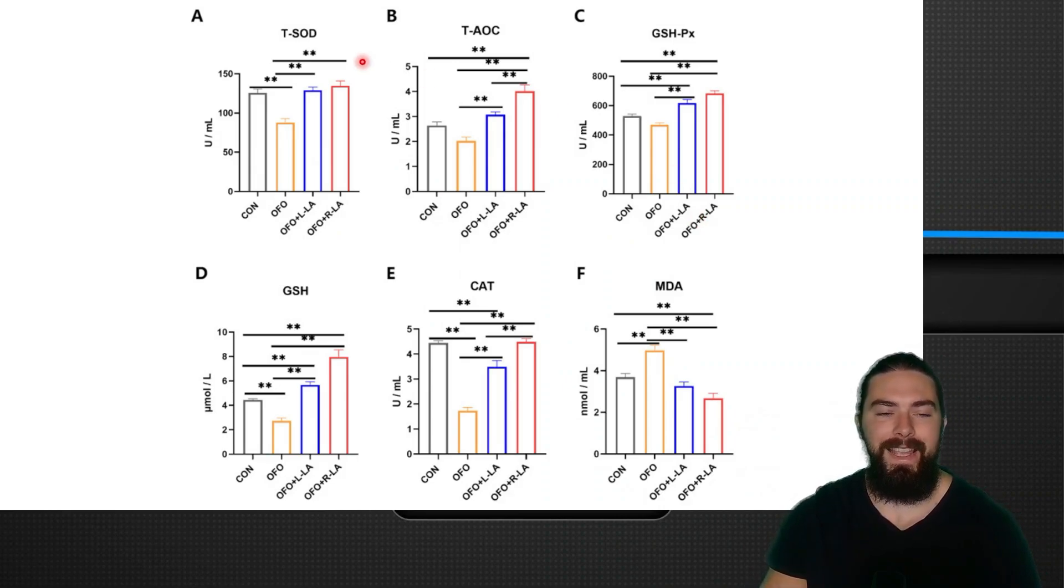They also looked at antioxidant defense enzymes like superoxide dismutase—these enzymes quench free radicals. Again, you can see that R-lipoic acid was the best at enhancing these antioxidant defense enzymes, and MDA, which is a marker of oxidative stress, was the lowest with R-lipoic acid. You can clearly see that R-alpha-lipoic acid is much better than S-lipoic acid, so if you want to get something, you want to make sure it's the proper one, which is the R-alpha-lipoic acid.